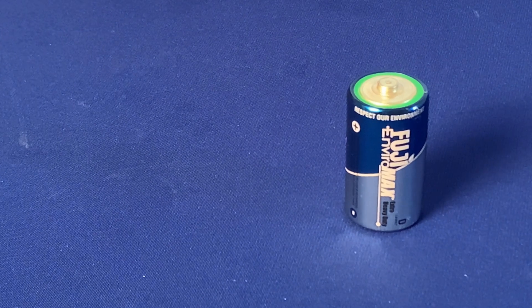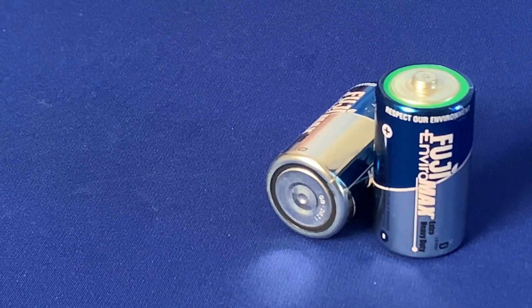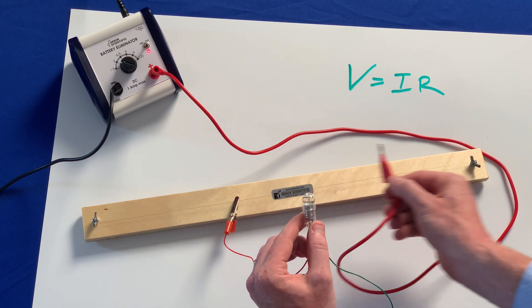Batteries also have internal resistance which increases as they discharge. Many teachers already know that that's not the case with the battery eliminator, making it ideal for accurate Ohm's law experiments.